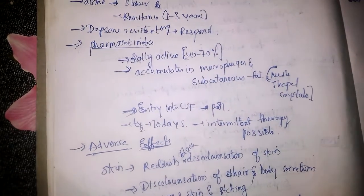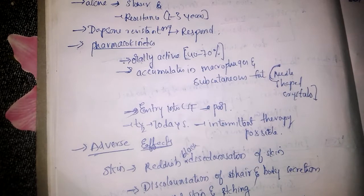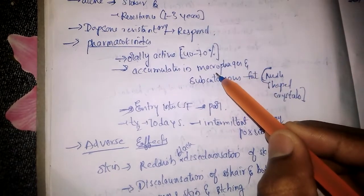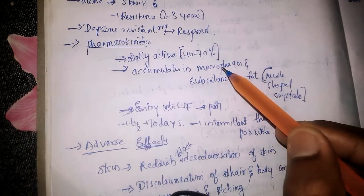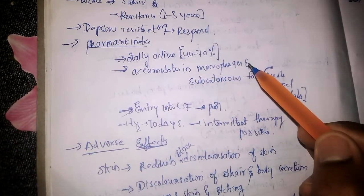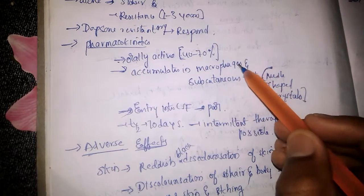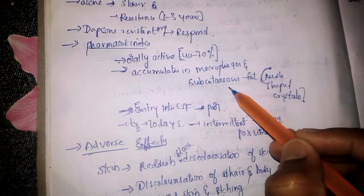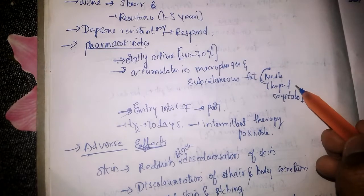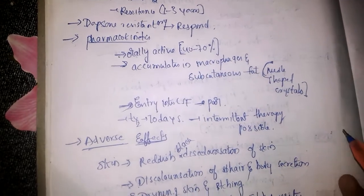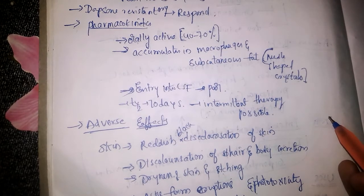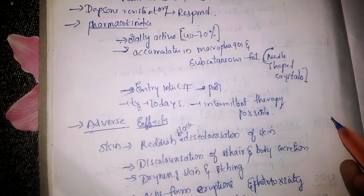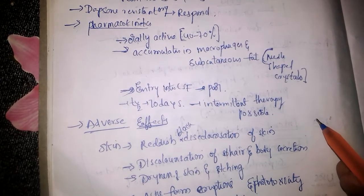Coming to pharmacokinetics, Clofazimine is an orally active drug. About 40 to 70% of the orally administered drug is absorbed through the GIT, and it accumulates in macrophages and subcutaneous tissue where it appears as needle-shaped crystals. The entry into CSF is very poor, and the half-life is almost 70 days. Due to this long half-life, it can be used in intermittent therapy.